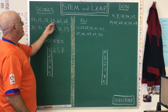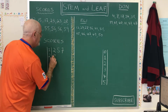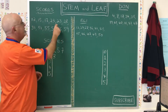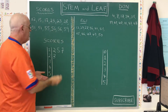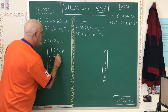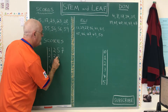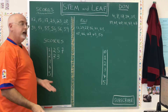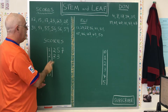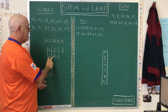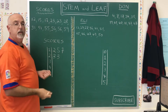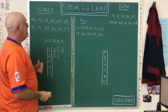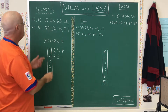Now I have a 23, I put it here, but I have a second 23. What do I do? I put another 3 here, and the person reading the table can see there's a 23 and there's another 23. So we can deal with that.